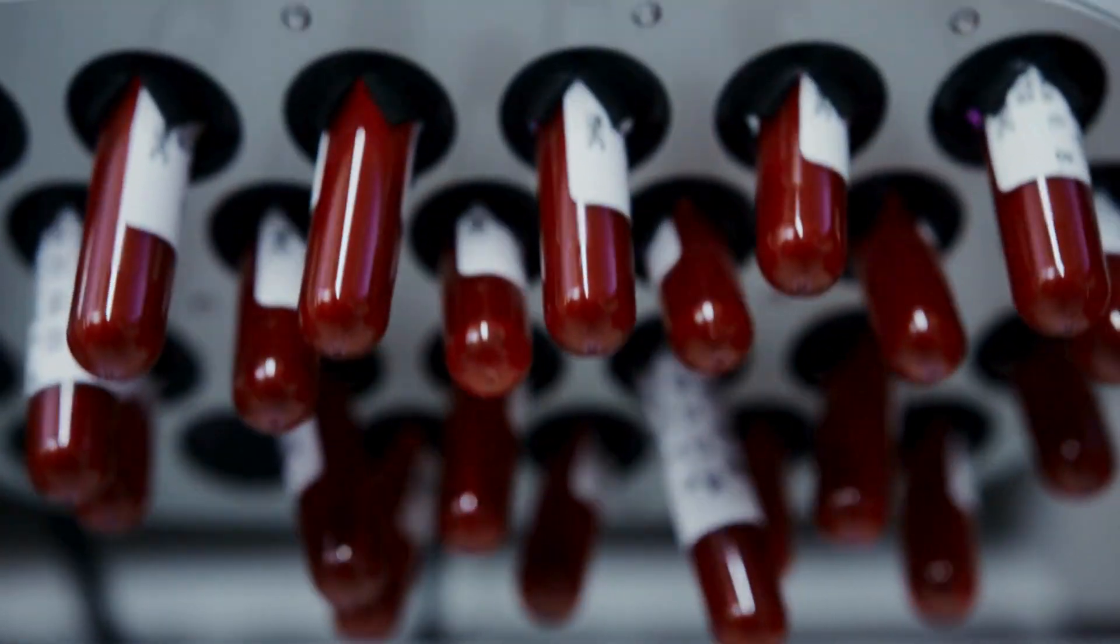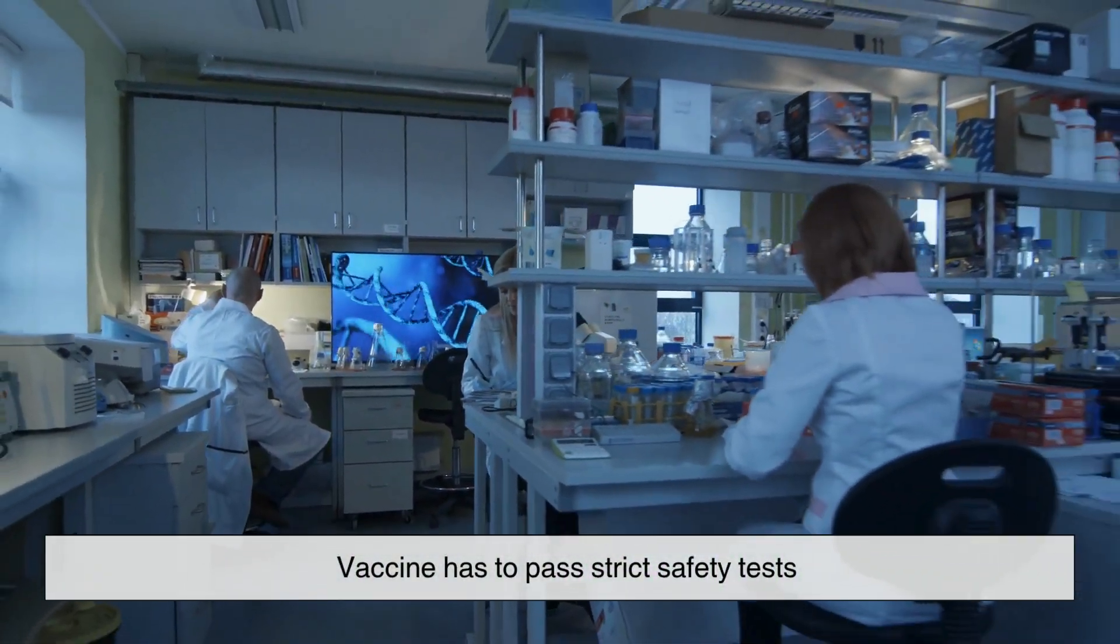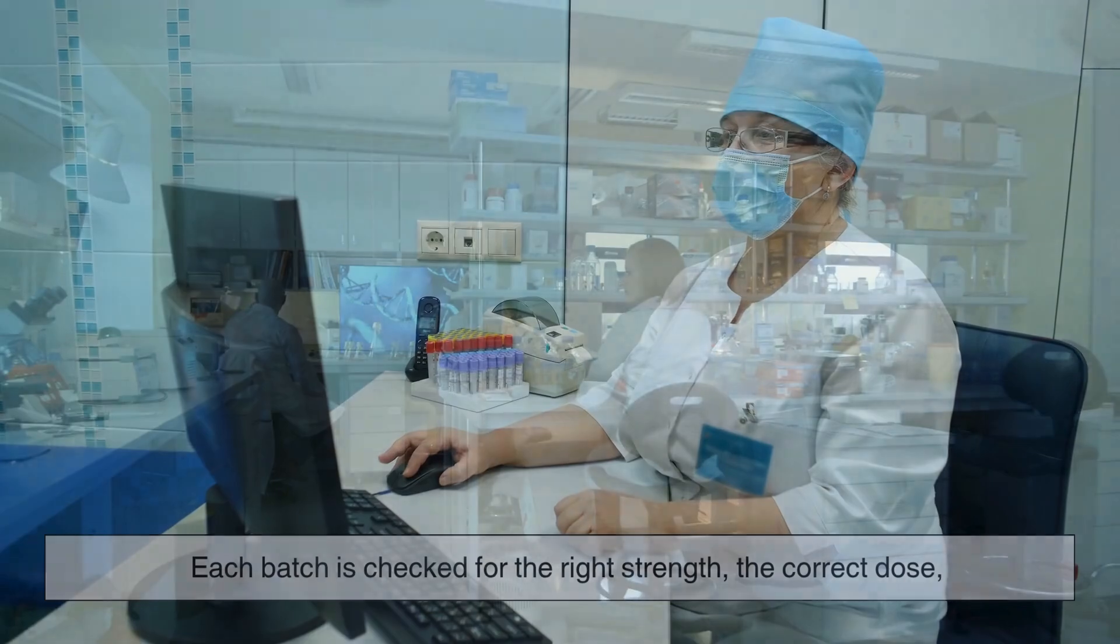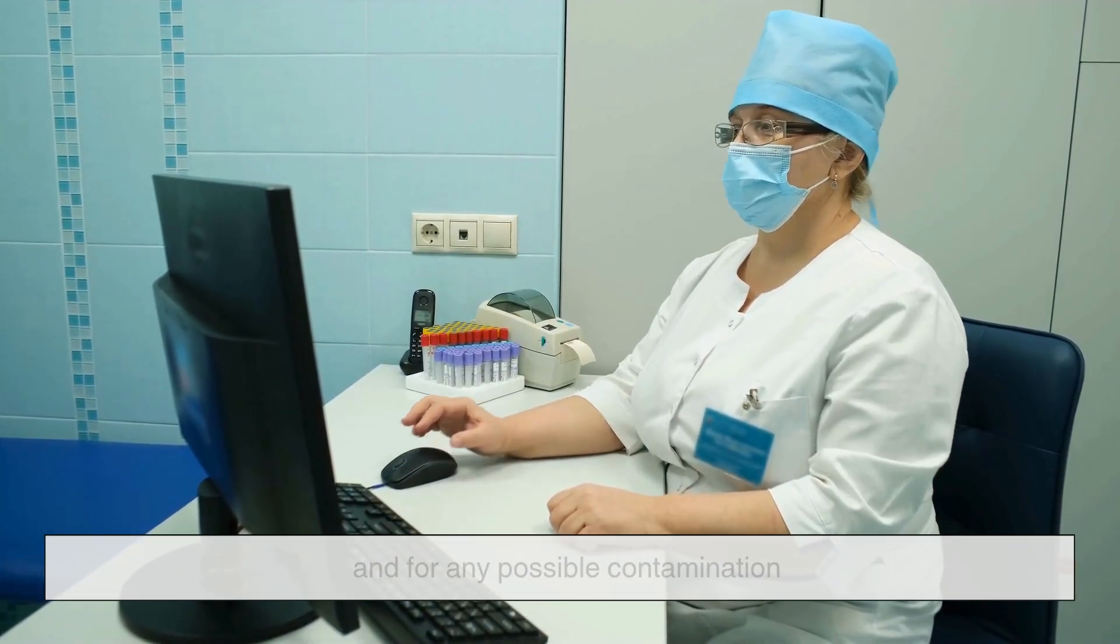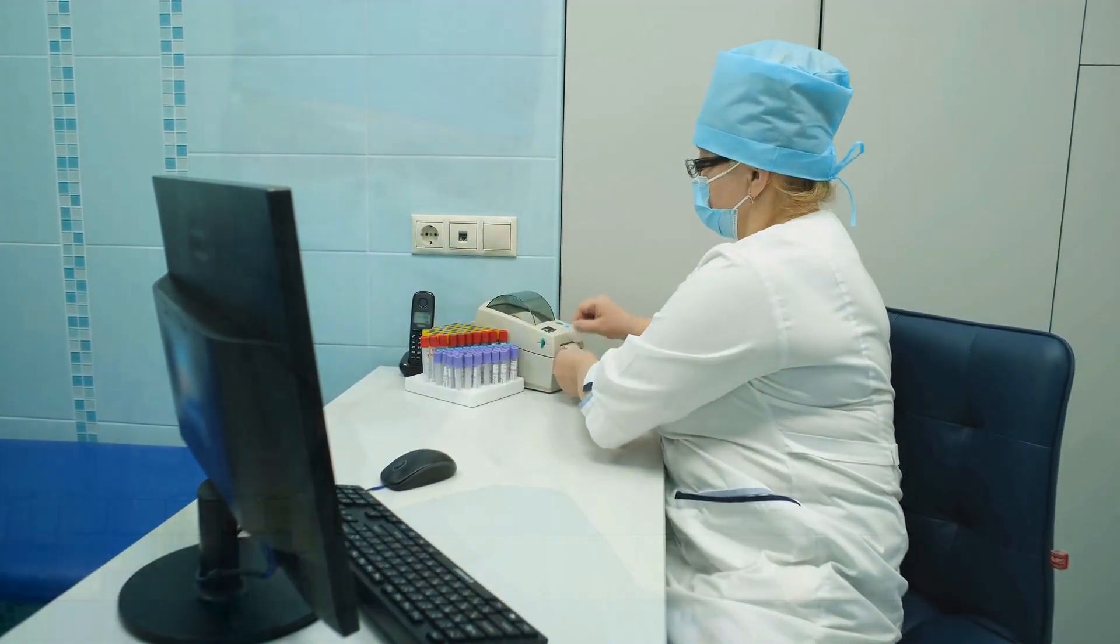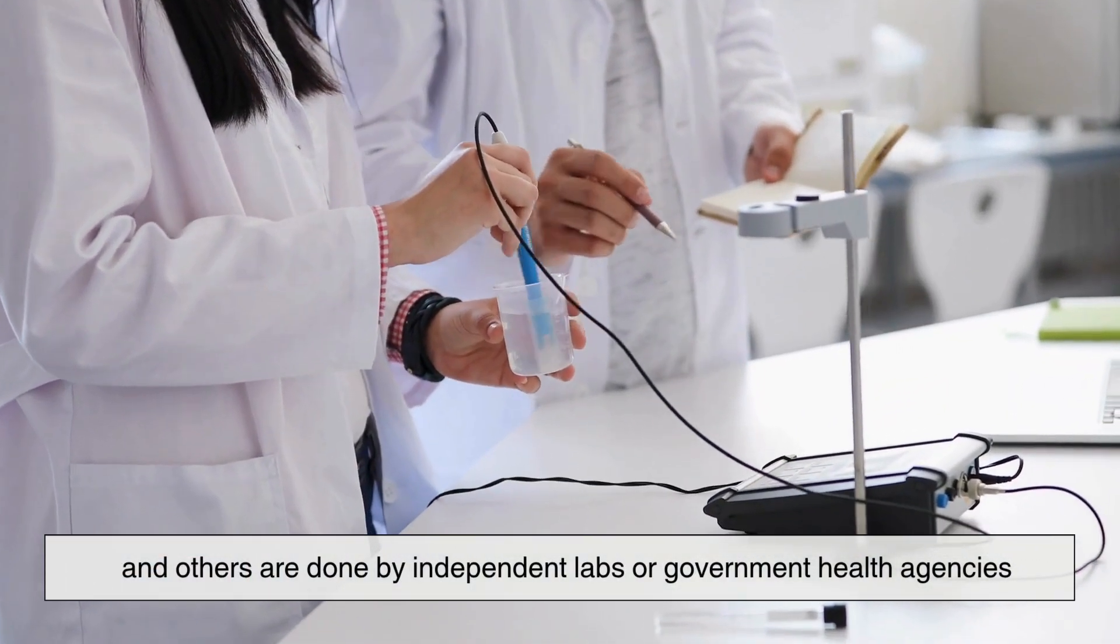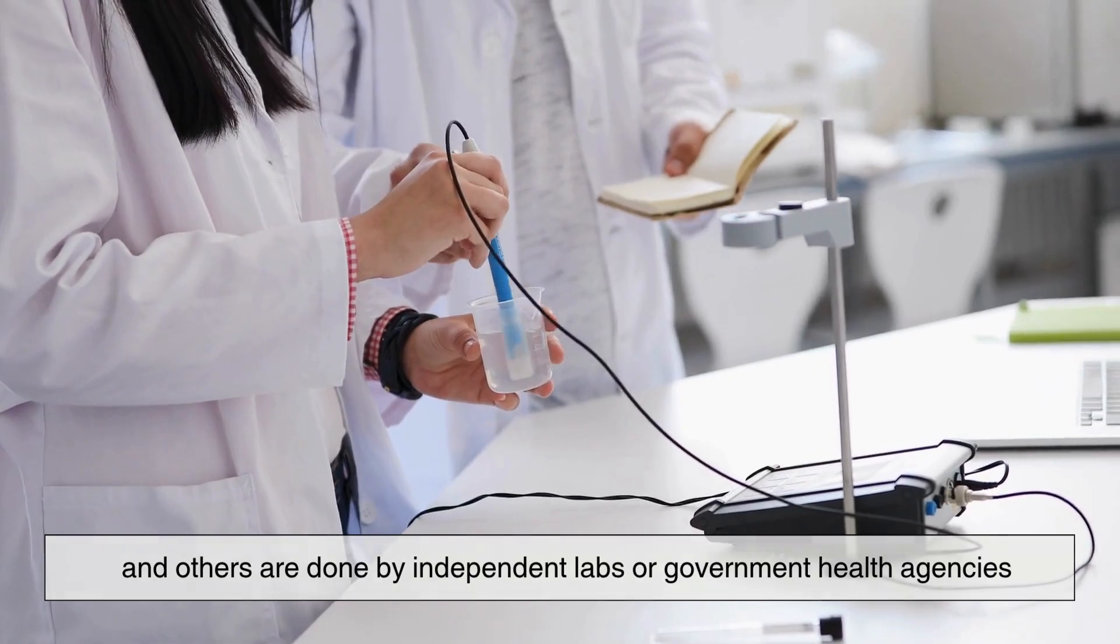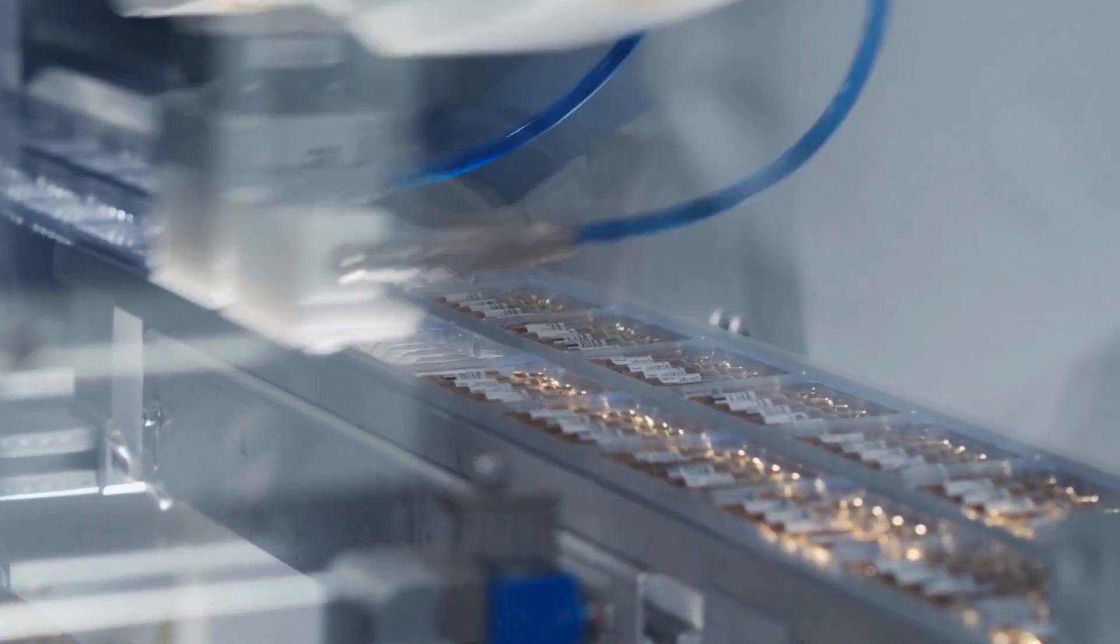After the vials are filled, the vaccine isn't sent out right away. First, it has to pass strict safety tests. Each batch is checked for the right strength, the correct dose, and for any possible contamination. Some tests are done by the manufacturer, and others are done by independent labs or government health agencies. If a batch fails any test, it's thrown out.